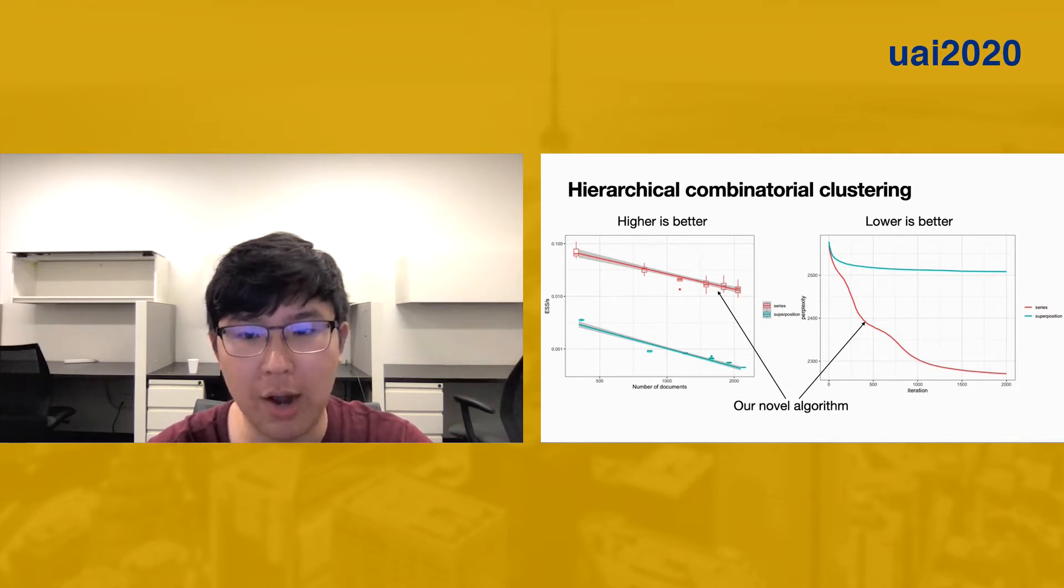It also generates higher quality prediction measured by perplexity compared to the slice sampler of Porteous et al. for beta-negative binomial process, as you can see on the right.